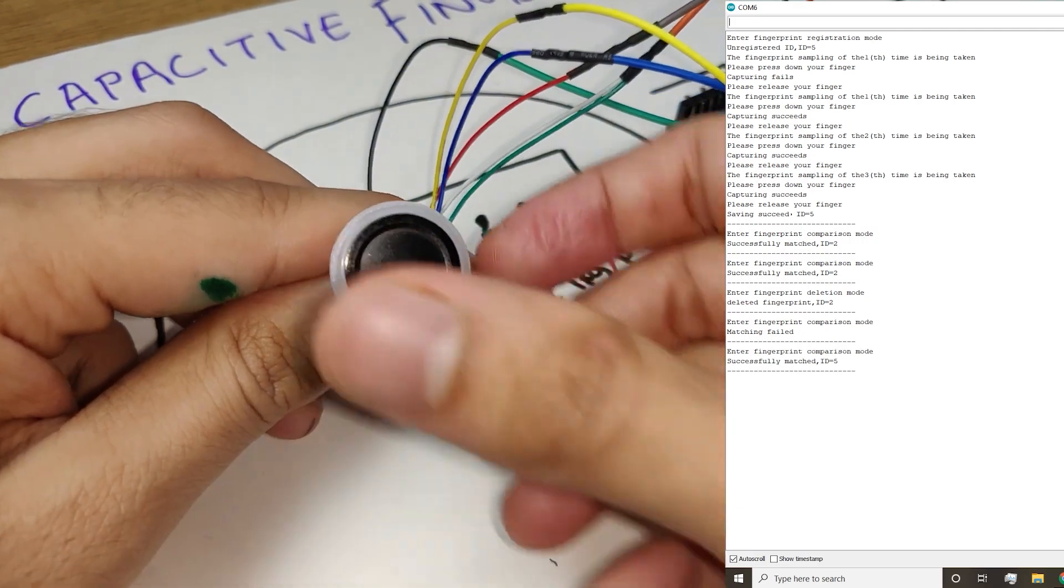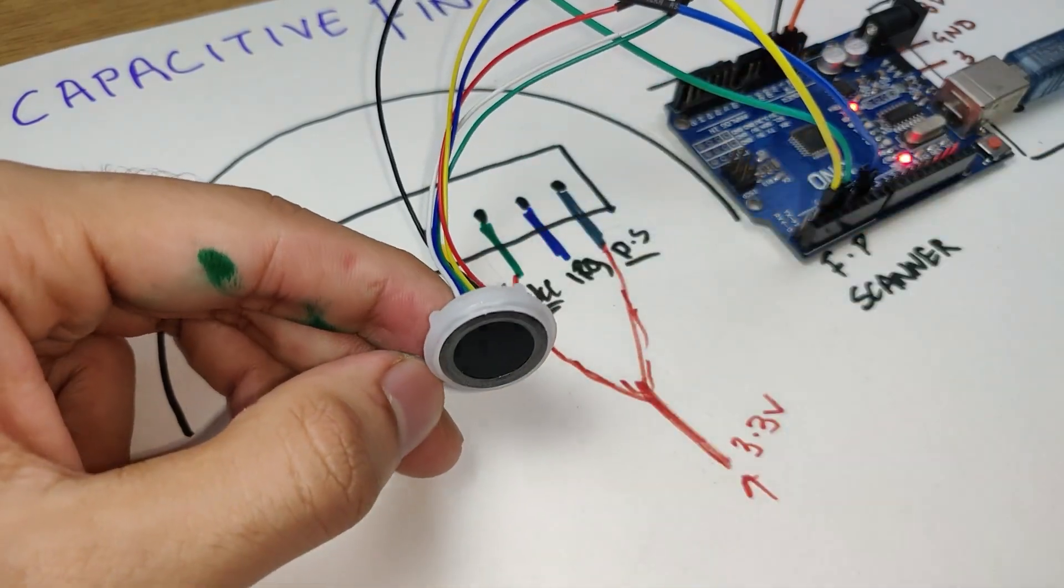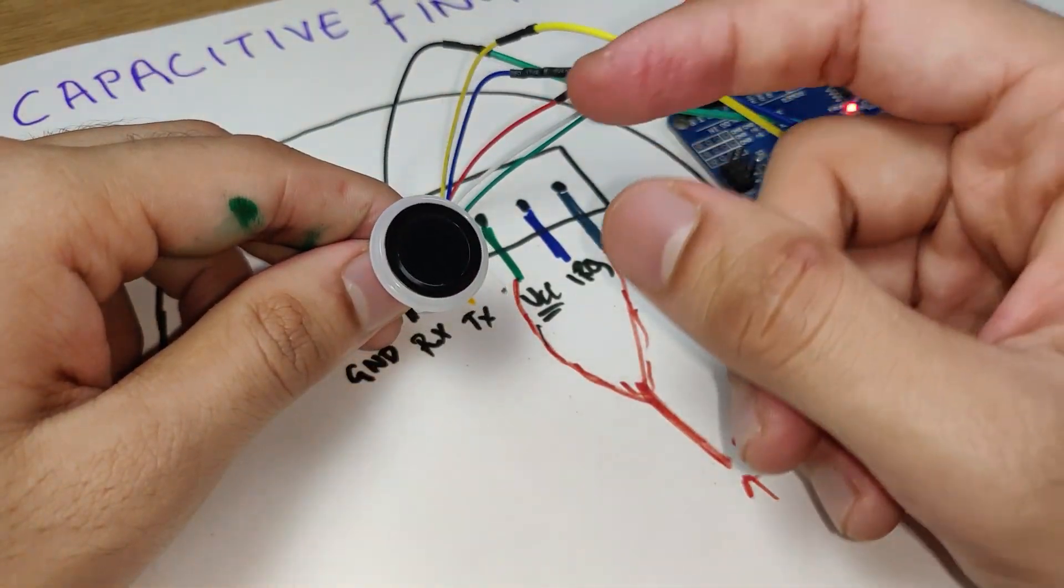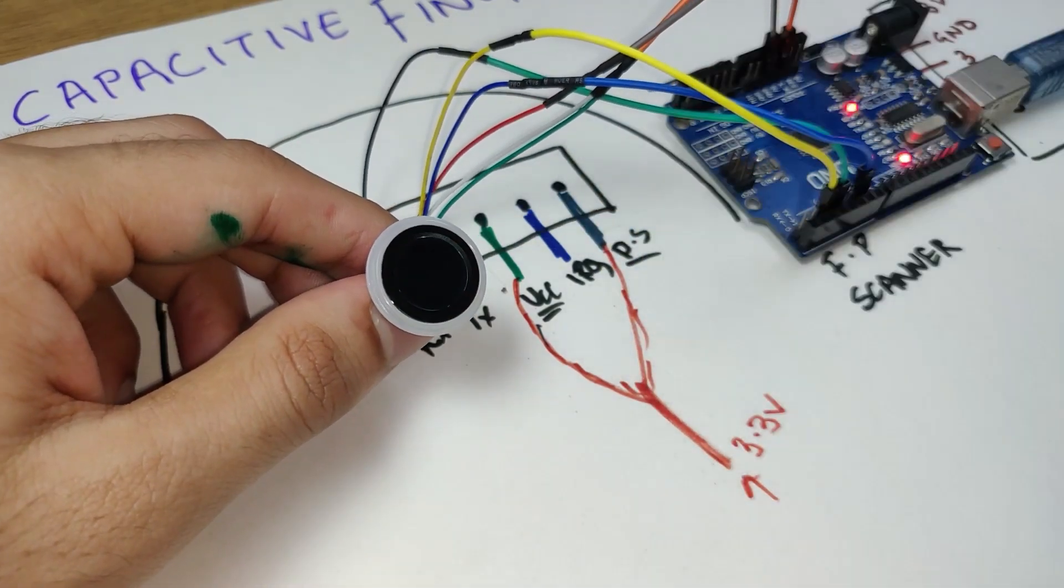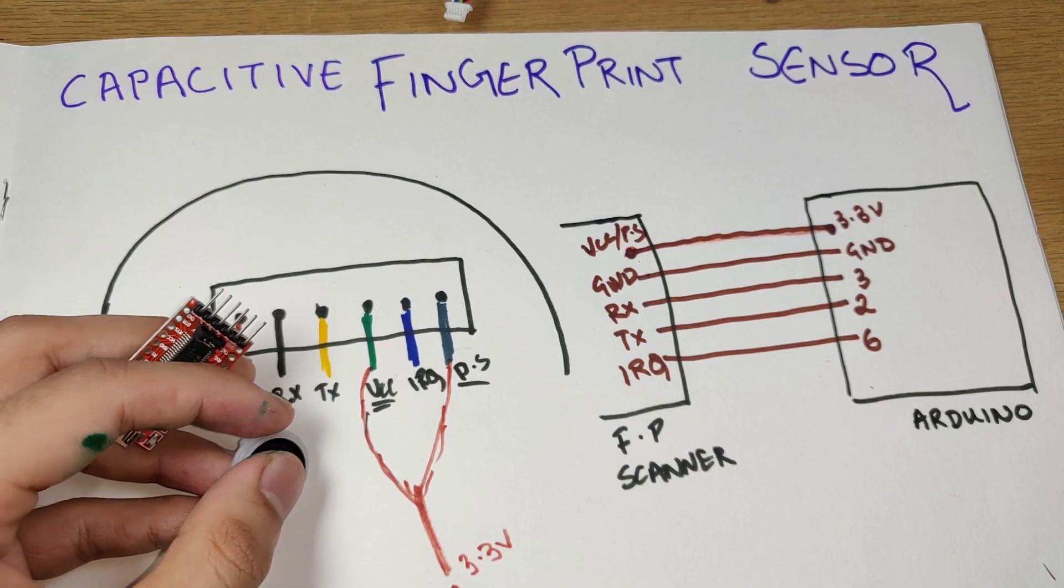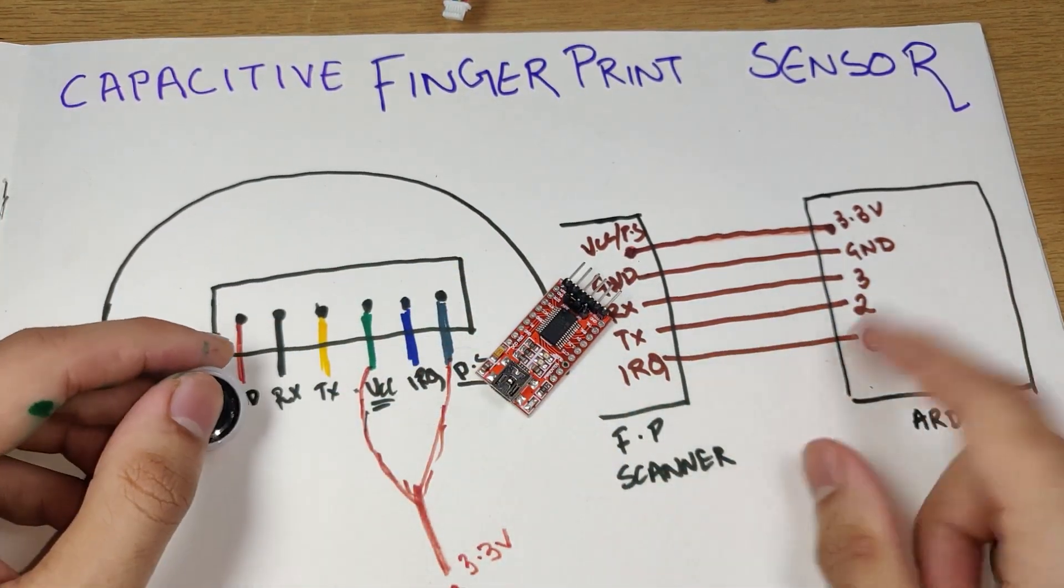Yes it does detect with ID5. So that is how you can play around with this capacitive fingerprint sensor. You can use this code, modify it, add it to your project, and you'll be able to add a capacitive fingerprint scanner onto your project. Also if you want to, before connecting the fingerprint scanner to the Arduino, you can directly connect it to a USB to serial board.